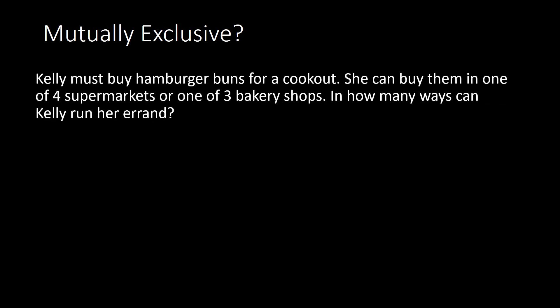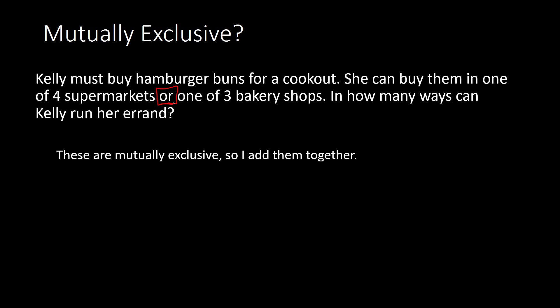Here, Kelly must buy hamburger buns for a cookout. She can buy them in one of four supermarkets or one of three bakery shops. In how many ways can Kelly run her errand? We see the keyword 'or' — she needs to pick between one or the other, only going to one location. So these are mutually exclusive, and therefore we add them together: 4 plus 3 gives a total of 7 possibilities.